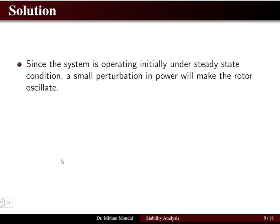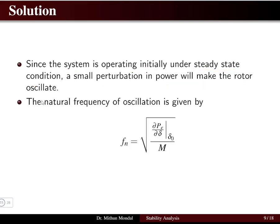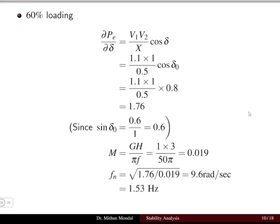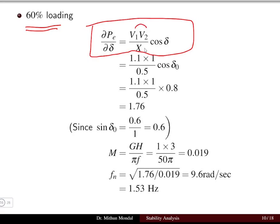When the system operates under steady-state and a small perturbation occurs, the rotor will oscillate. The natural frequency of oscillation is given by ωₙ = √(dPe/dδ|δ₀ / M), where M = GH / (πf). The power-angle relationship is Pe = V₁V₂ / X_total × sin δ, so dPe/dδ = V₁V₂ / X_total × cos δ₀.